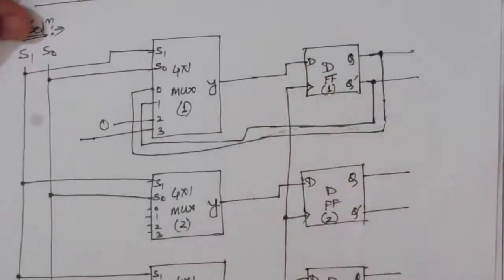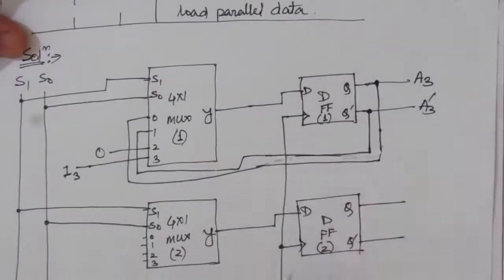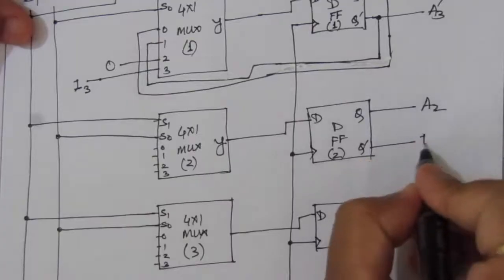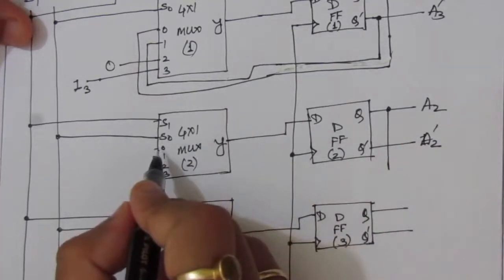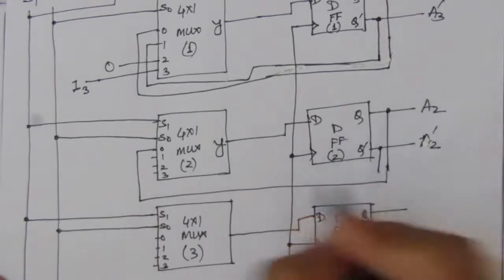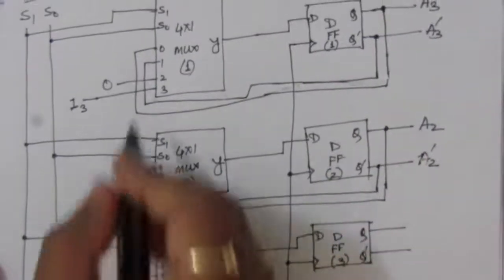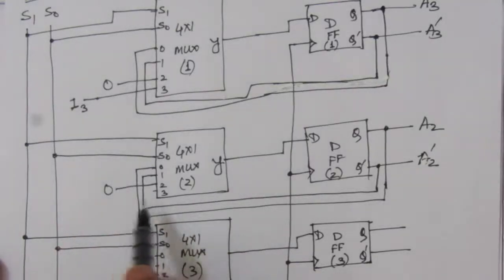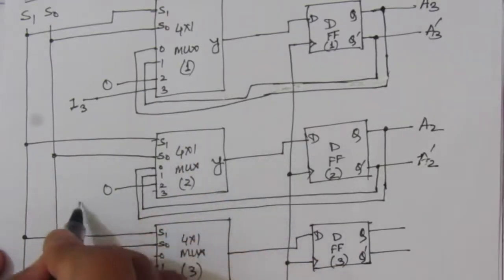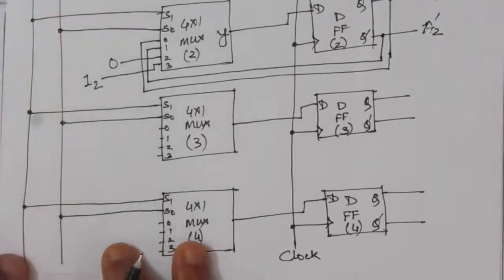This is a 4-bit register. For the fourth stage, we apply A3 at the D input, with output A3 and A3-complement. For the third stage, A2 is the output and A2-bar is connected to input port 1. Similarly, a 0 is applied to input port 2 to clear the register when select line is 1 and 0. For the load case (select 1,1), I2 is connected to input port 3. In the same way, the remaining two flip-flops and multiplexers are connected.